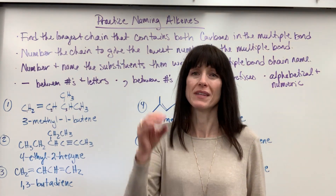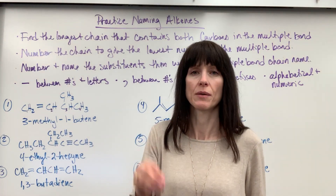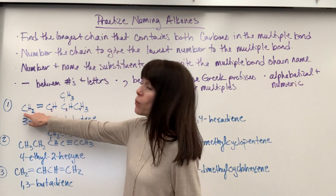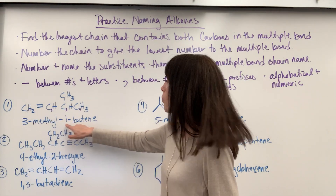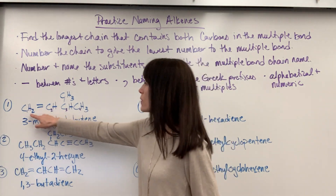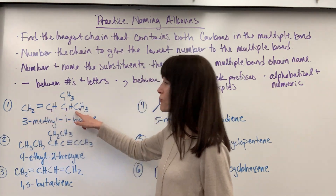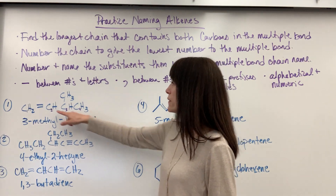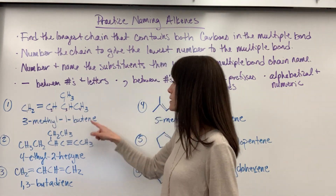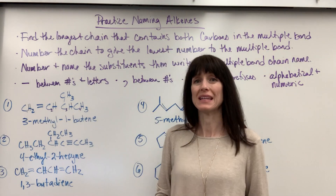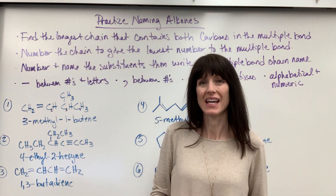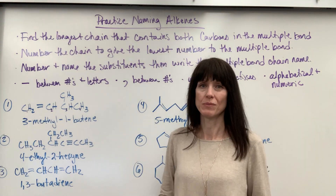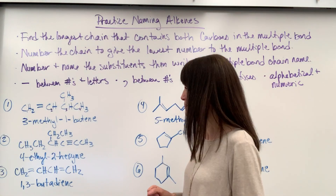The double bond is on the first carbon. You always write down the carbon that first touches the double bond, so that's carbon one. I had one, two, three, four in my longest parent chain, so it's 'bute' — there's a double bond, so you end with '-ene.' The name is 3-methyl-1-butene.